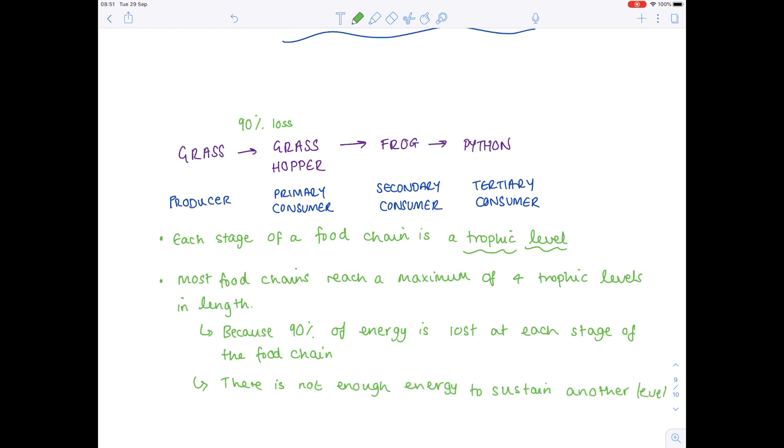Occasionally you do get food chains which contain five trophic levels. These tend to be marine or aquatic environments, because so much of the sun's energy reaches the surface of the ocean or sea that the phytoplankton photosynthesize abundantly, and therefore you can get much longer food chains.